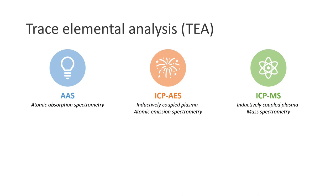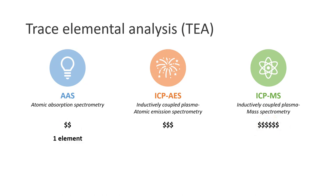So which one is better? Well, it depends on the purpose and the budget. When it comes to cost, AAS is usually the most affordable, while ICP-MS is the most expensive. Typically, AAS allows analysis of one element at a time, while ICP-AES and ICP-MS allow analysis of multiple elements simultaneously. If you are dealing with simple samples, AAS can be used. If you are dealing with more complex real-world samples, ICP-AES or ICP-MS may be a better choice.